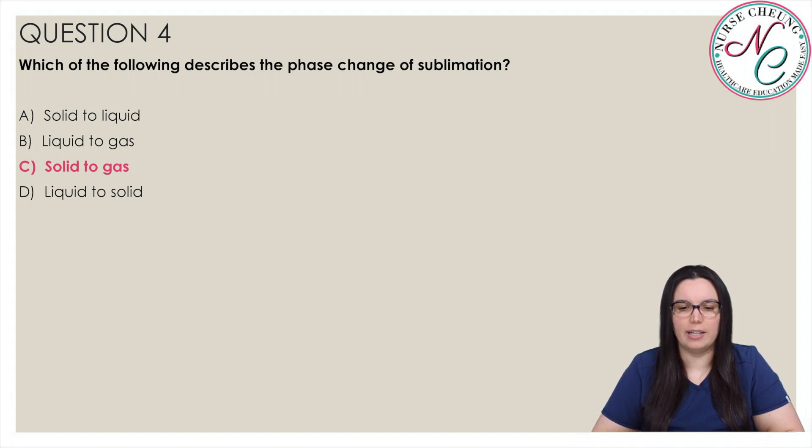Choice A solid to liquid is known as melting. Choice B liquid to gas can be characterized by vaporization, evaporation, or even boiling depending on the energy input. And choice D liquid to solid is typically known as freezing.